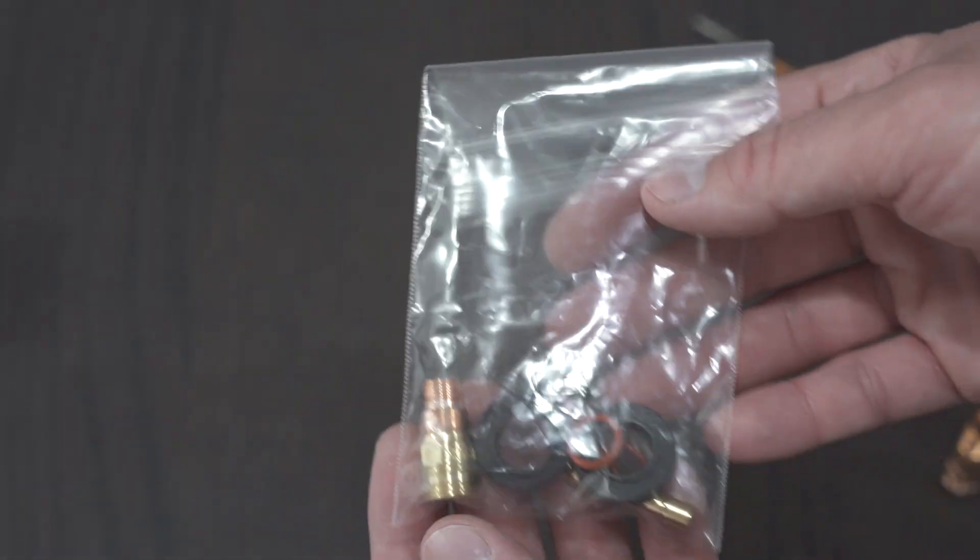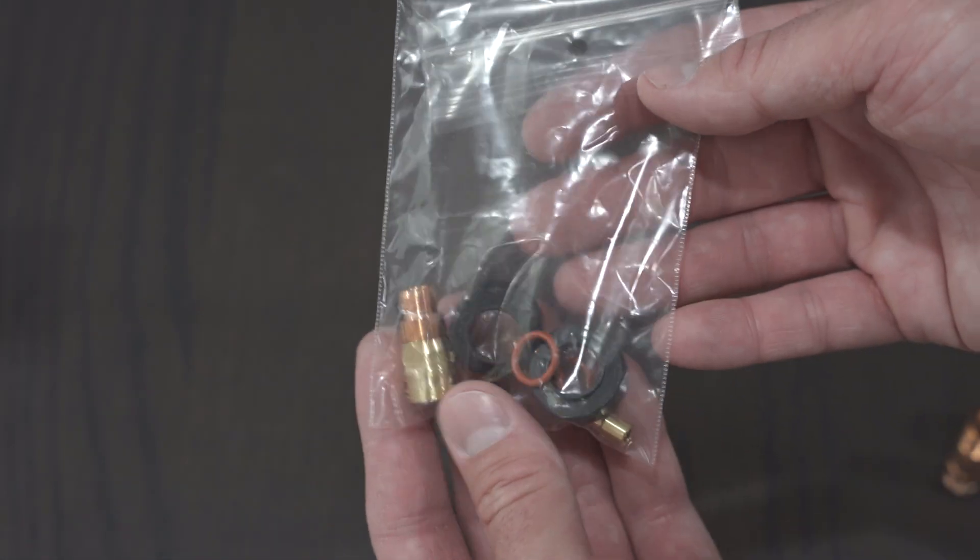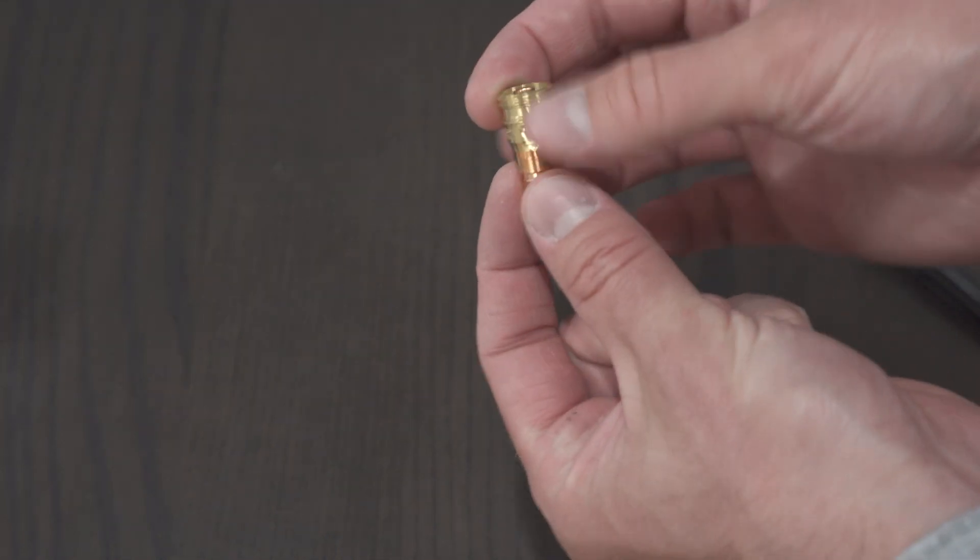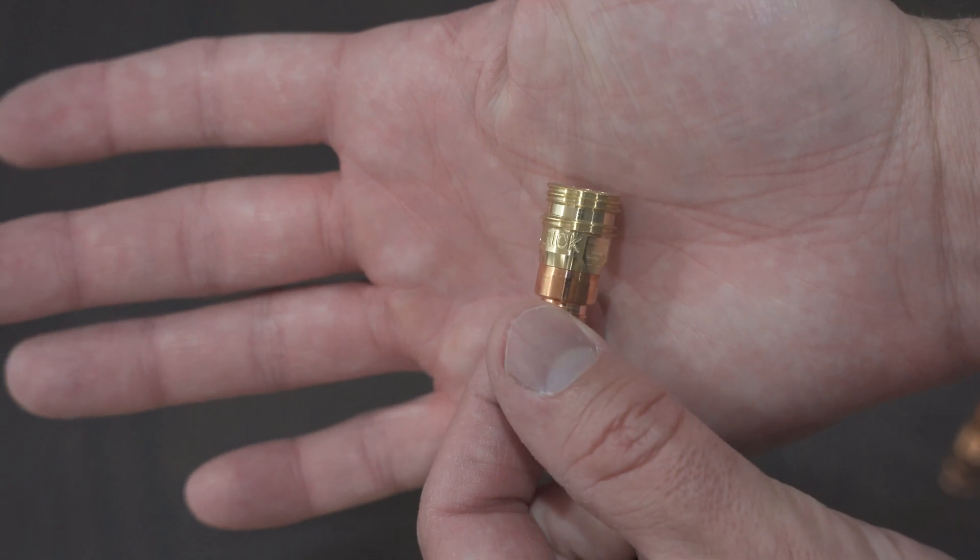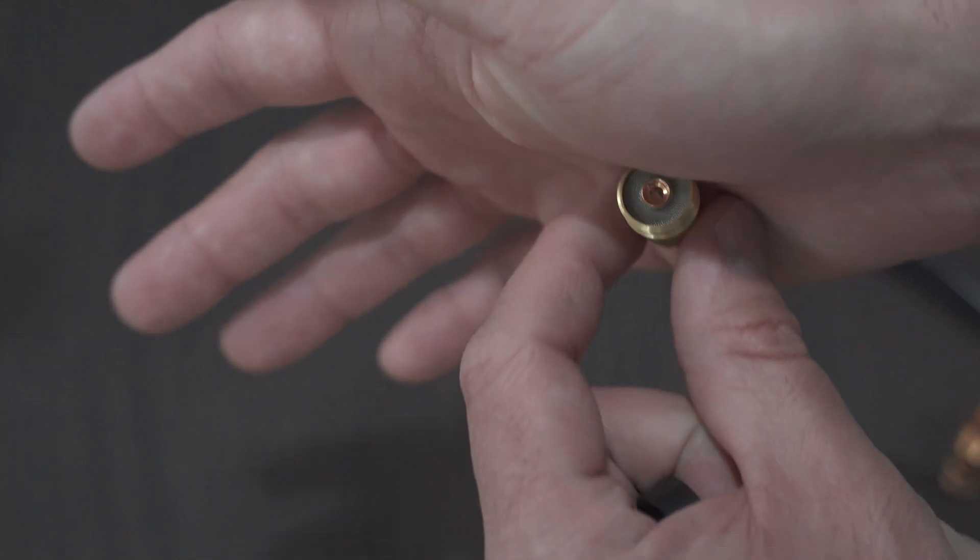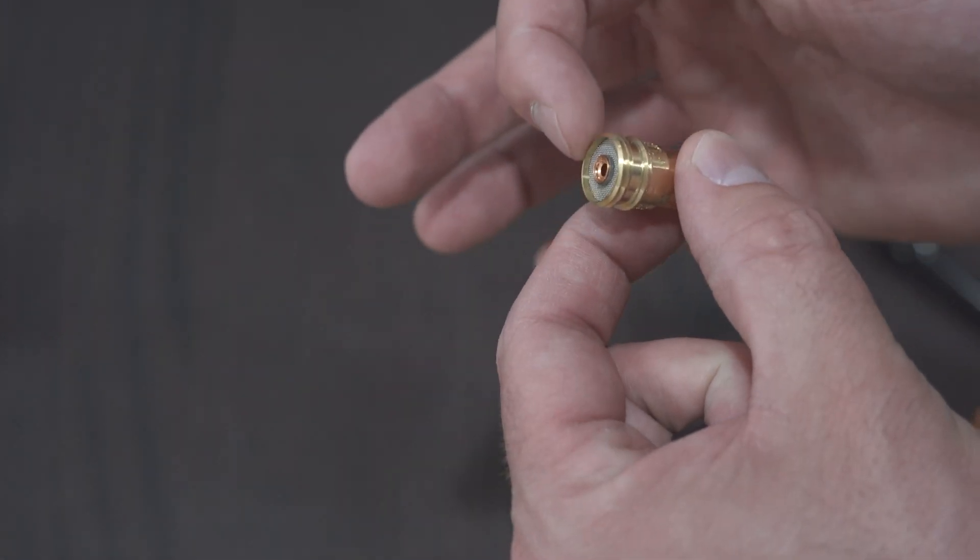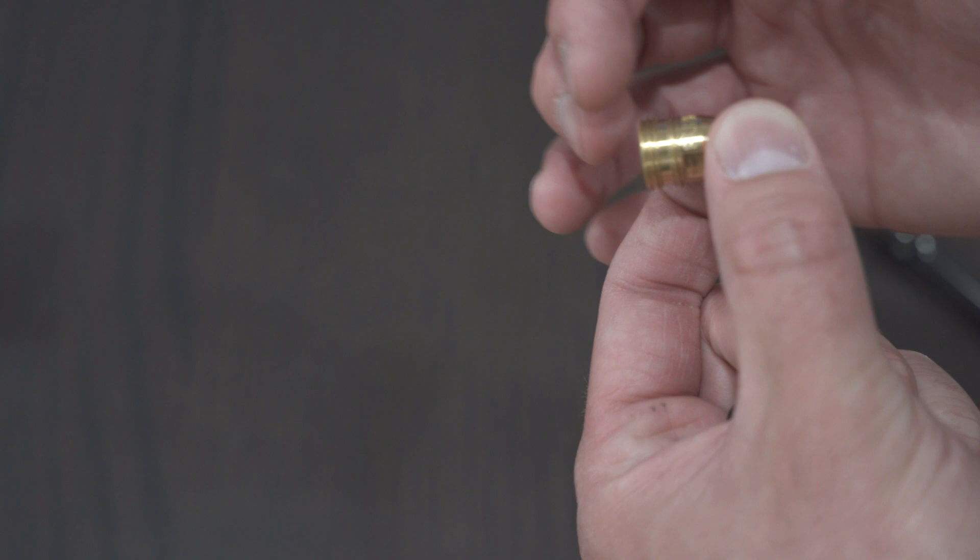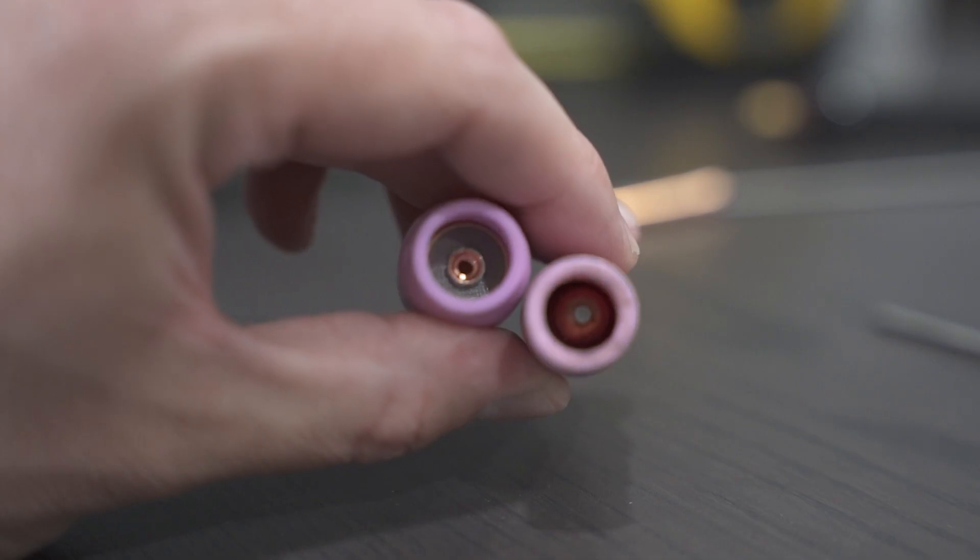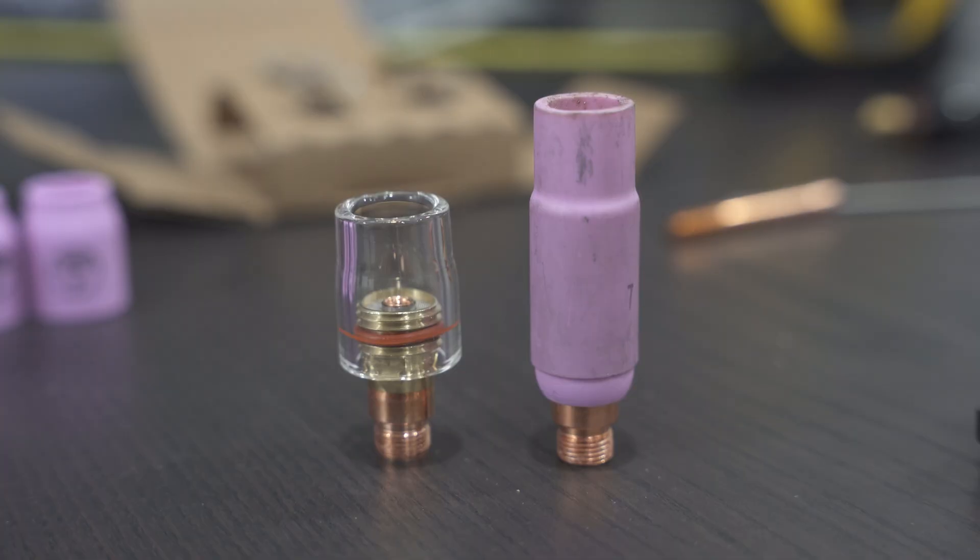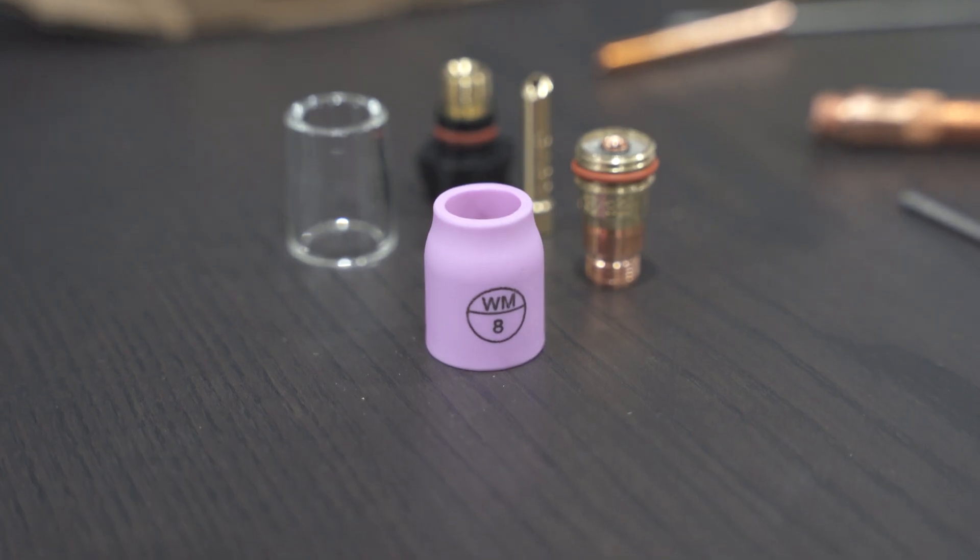Let's jump into it. If you go to weldmonger.com or a bunch of other places, you can get this kit which is the stubby gas lens kit. Let's pull it out and take a look at some of the details inside. What you get is this furic gas lens adapter. You can see it says furic on there. And inside, you'll see that there's stainless steel mesh. What this does is it makes the argon flow out more evenly and more laminarly in the direction that the cup is. You get a more equal flow where the gas flows out.